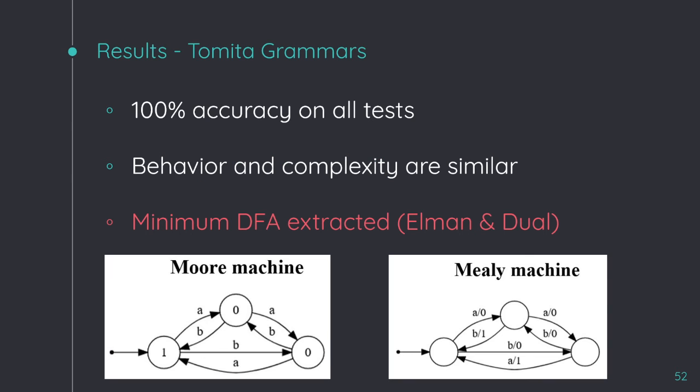When we extract the minimum deterministic finite automaton from the Elman network, the picture on the left side, and the dual network on the right side, we can observe that they are the automata that solve the regular language, which is, in this case, the Tomita 6 grammar, and also that they correspond to the Moore and the Mealy machines. I want to say that the same results are obtained for the other 6 Tomita grammars.